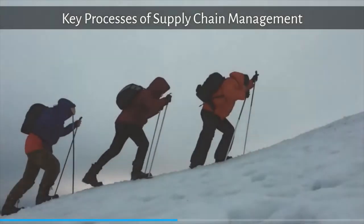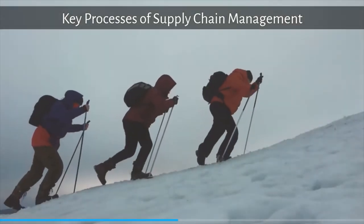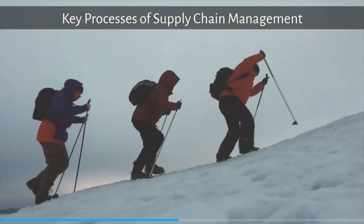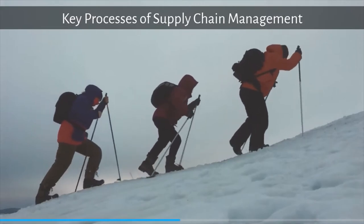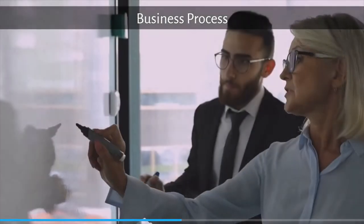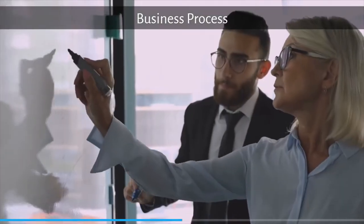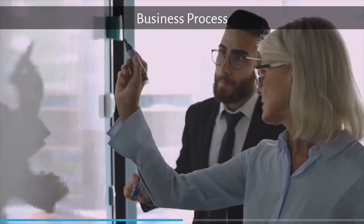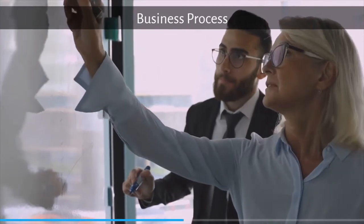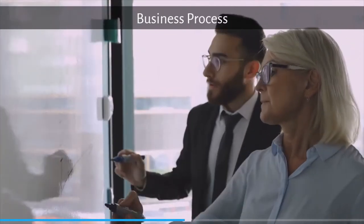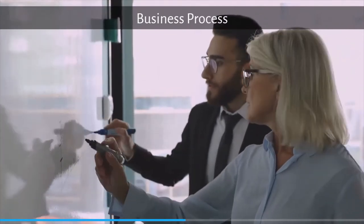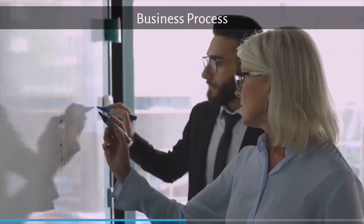There are three key processes of supply chain management. This includes business process. Business process looks at bundles of interconnected activities that stretch across the organization in supply chain.